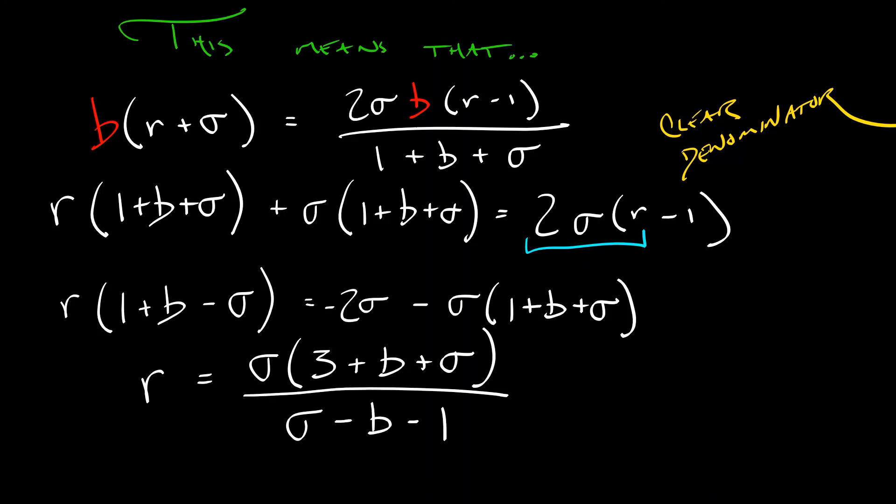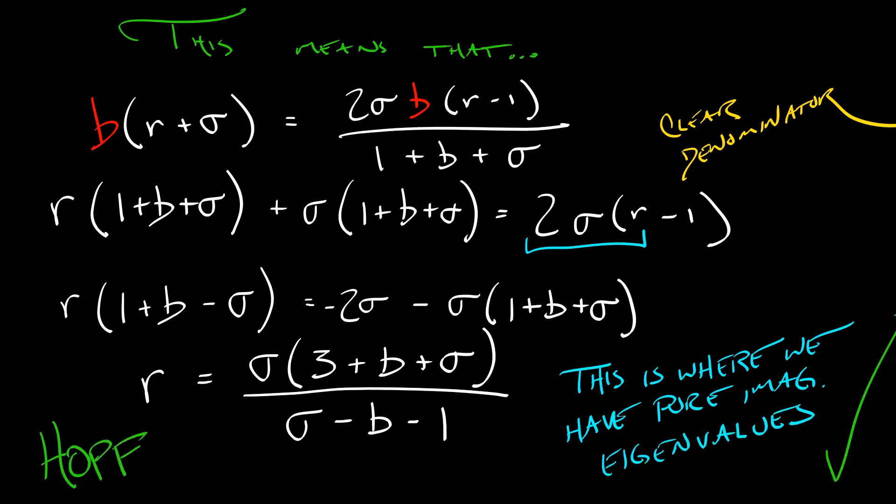What is this? This is where we have pure imaginary eigenvalues. So as we move r through this particular parameter value, we have a Hopf bifurcation.